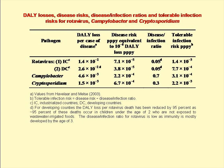This table lists the index pathogens used: Rotavirus, the bacterium Campylobacter, and Cryptosporidium, the protozoan. The table also gives the DALY loss per case of disease caused by each, which can be thought of as the disease cost in DALYs per disease episode. There is a slight difference in rotavirus cost in industrialised and developing countries, but not for the other two. The table gives for each pathogen the tolerable disease risk per person per year for the 10 to the minus 6 DALY loss per person per year, the disease-to-infection ratio, and the resulting tolerable infection risk per person per year, using the equations on the previous slide.